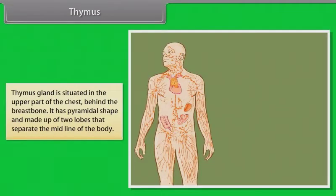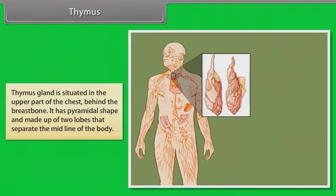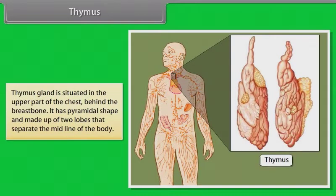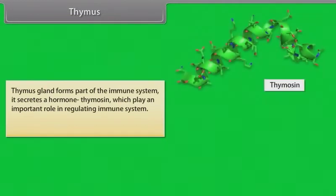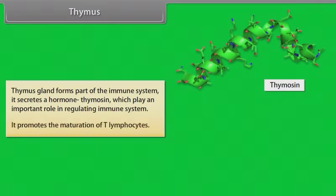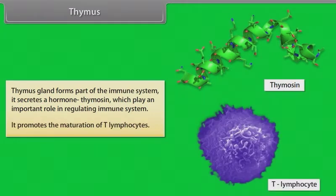The thymus gland is situated in the upper part of the chest behind the breastbone. It has a pyramidal shape and is made up of two lobes that separate at the midline of the body. The thymus forms part of the immune system and secretes a hormone called thymocin, which plays an important role in regulating the immune system and promotes the maturation of T-lymphocytes.